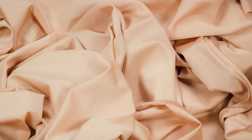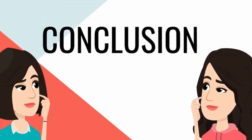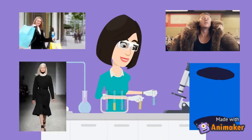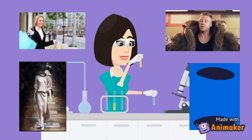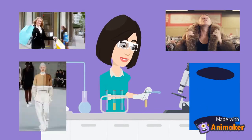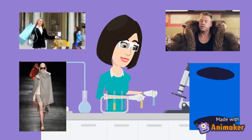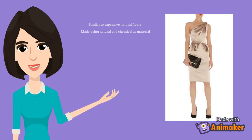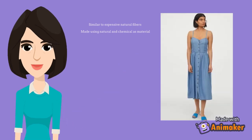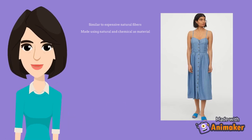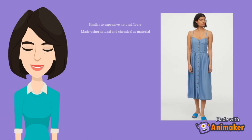Acetate has high gloss, good drape, and a smooth texture. However, it cannot be heated, loses some strength when wet, and wrinkles easily. In conclusion, regenerated manufactured fibers — rayon, lyocell, and acetate — are made using common spinning methods to imitate expensive natural fibers, using both natural and chemical materials. Even though there are some environmental concerns, these less expensive fibers remain in high demand.